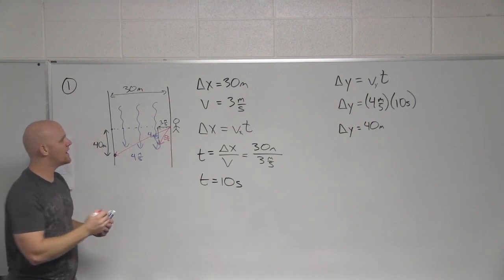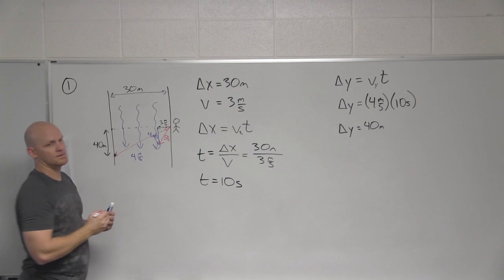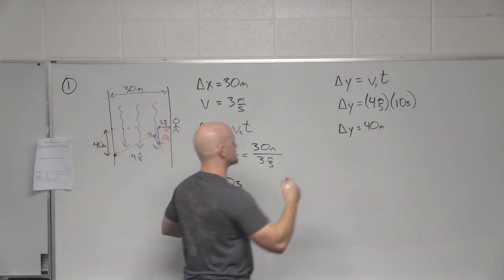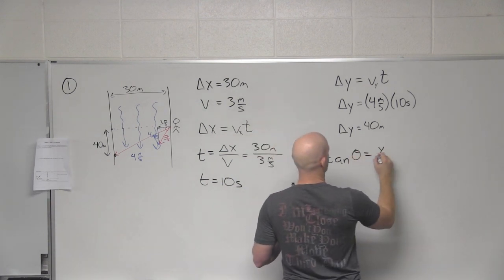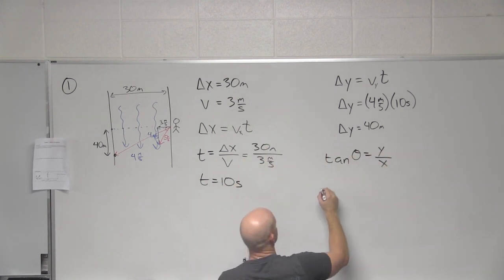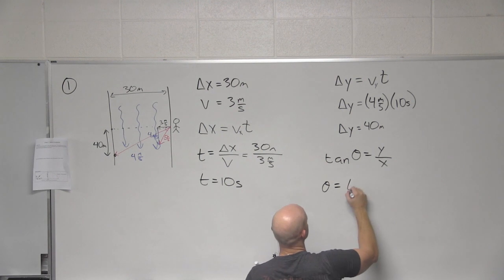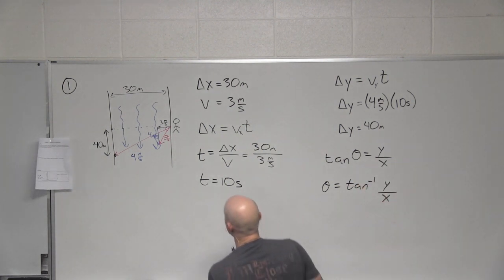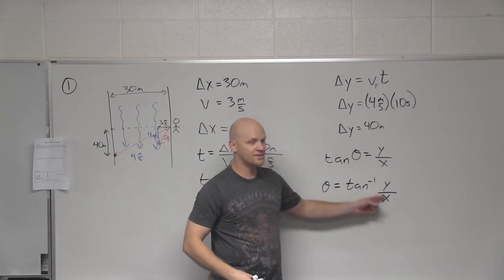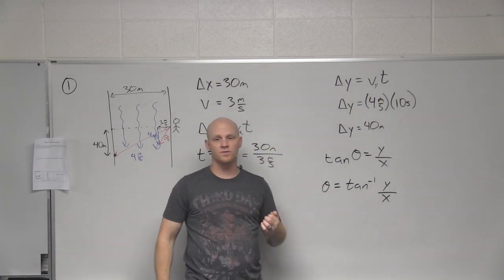Cool. How do I get the direction here? Use the arc tangent. Good. Use the arc tangent. So in this case we could say that tangent theta equals y over x, or theta equals the inverse tangent of y over x. And notice when you do this this way, inverse tangent of y over x, it always gets you the angle with respect to the horizontal.